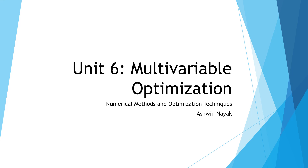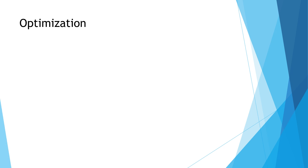In the lectures we had finished until Unit 5 — we had finished up with Fibonacci series method and golden section search method. That was the end of the fifth unit. So today we will start with the sixth unit, which is about multivariable optimization.